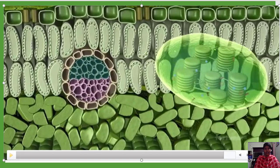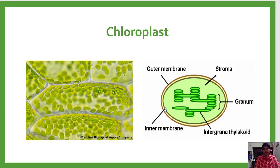To summarize the chloroplast structure: the outer membrane and inner membrane are visible, with the stacks of thylakoid membranes forming the grana — singular is granum, plural is grana. The fluid part inside the chloroplast is called stroma. These are the chloroplasts located inside the cell.